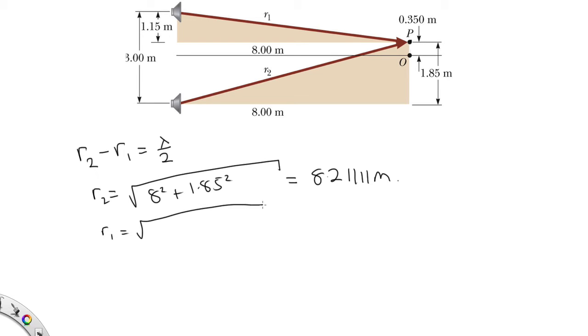R1 is equal to the square root of, in this case, we've got the length 8, and the height is equal to 1.15. So it's 8 squared plus 1.15 squared, and that gives us 8.08222 meters.